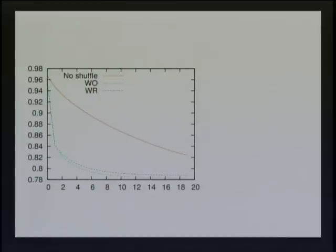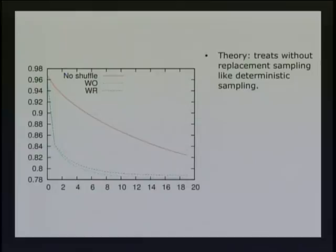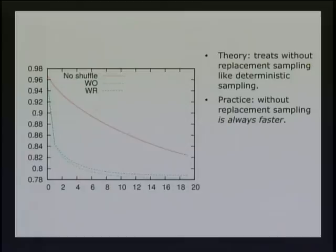The theory treats without-replacement sampling, or any biased sampling, like the red line — and we know that's not true. In practice, without-replacement sampling for stochastic gradient descent is always faster, and even biased orderings are still faster. The question is why. This last part of the talk is about a paper appearing at COLT in a couple of months. Let's analyze something really simple: least squares with an exact solution of zero cost — solving an over-determined system of equations using stochastic gradient descent.